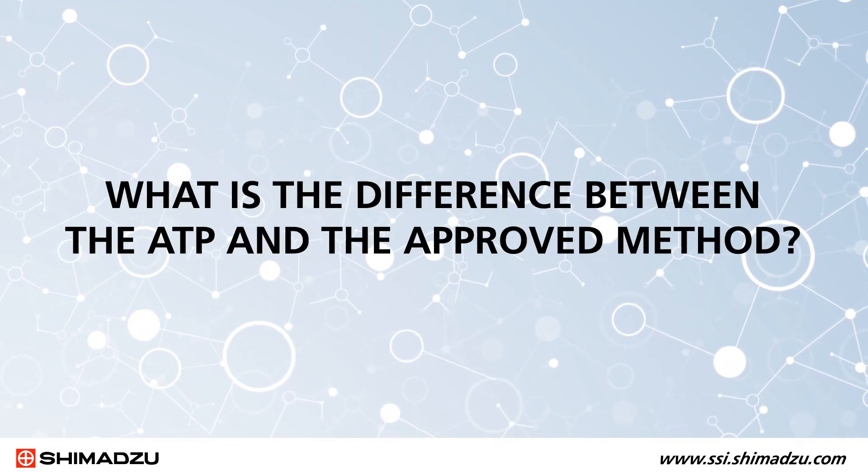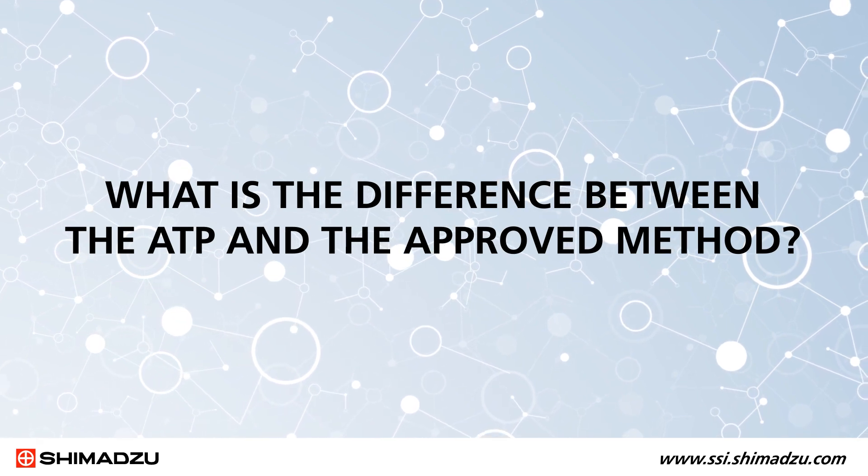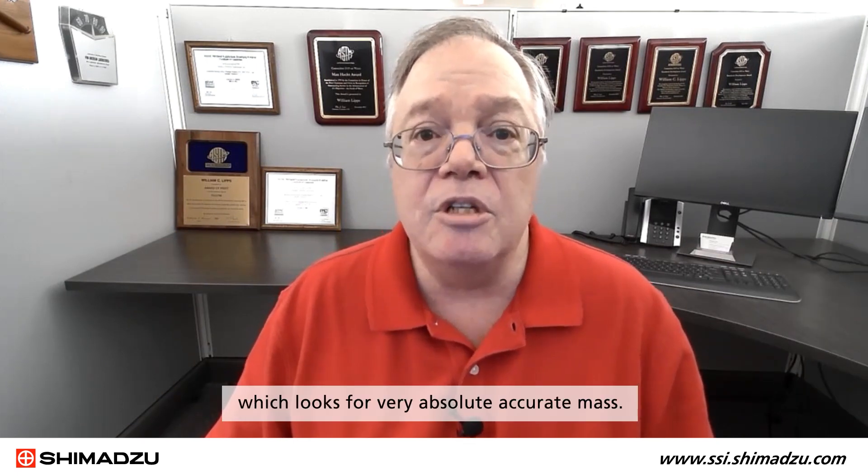The PACE 1613-0-SSI alternative test procedure for dioxins and furans was validated on the Shimazu GCMS-TQ8050NX. The only real difference between the approved method and the ATP is the detector. In the approved method, you use a high resolution mass spectrometer which looks for very accurate absolute mass. In the GC-MS/MS or triple quad detector, you're looking for MRM transitions.